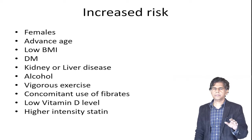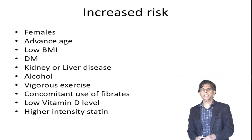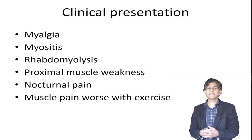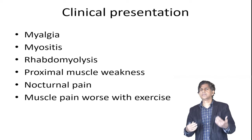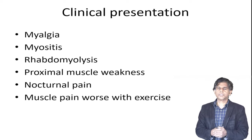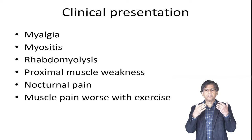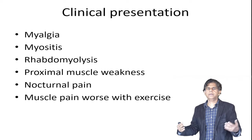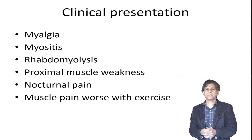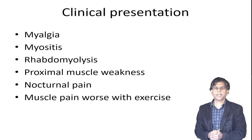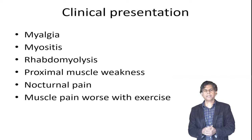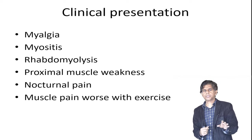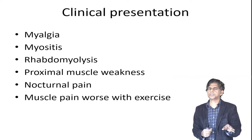When dose is increased, complications go up. Clinical presentation includes muscle pain, muscle inflammation, muscle weakness, and rhabdomyolysis — where muscle breakdown products flood the kidneys and can cause renal shutdown. Other symptoms include proximal muscle weakness, nocturnal pain, and muscle pain worsened with exercise. Be especially careful if you are doing vigorous or military-type exercise while on these drugs.